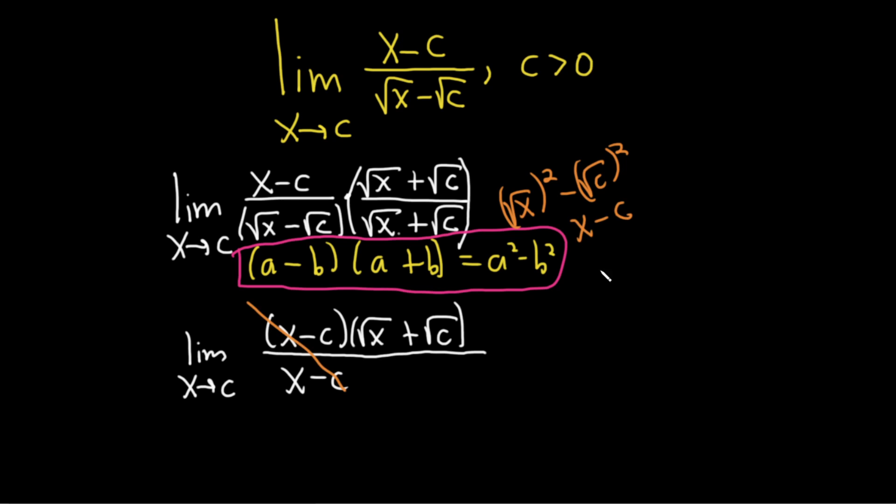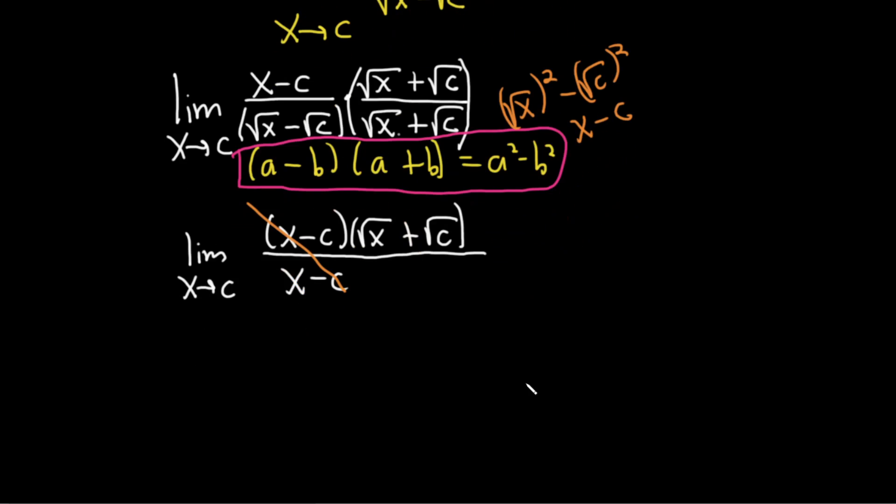And look at that. Boom. Super awesome, right? We get rid of that super annoying x minus c. That was the reason, well, that wasn't the reason, but that is allowing us now to do the problem and finish. And then we're left with just this piece here, right? Cool. Square root of x plus the square root of c.